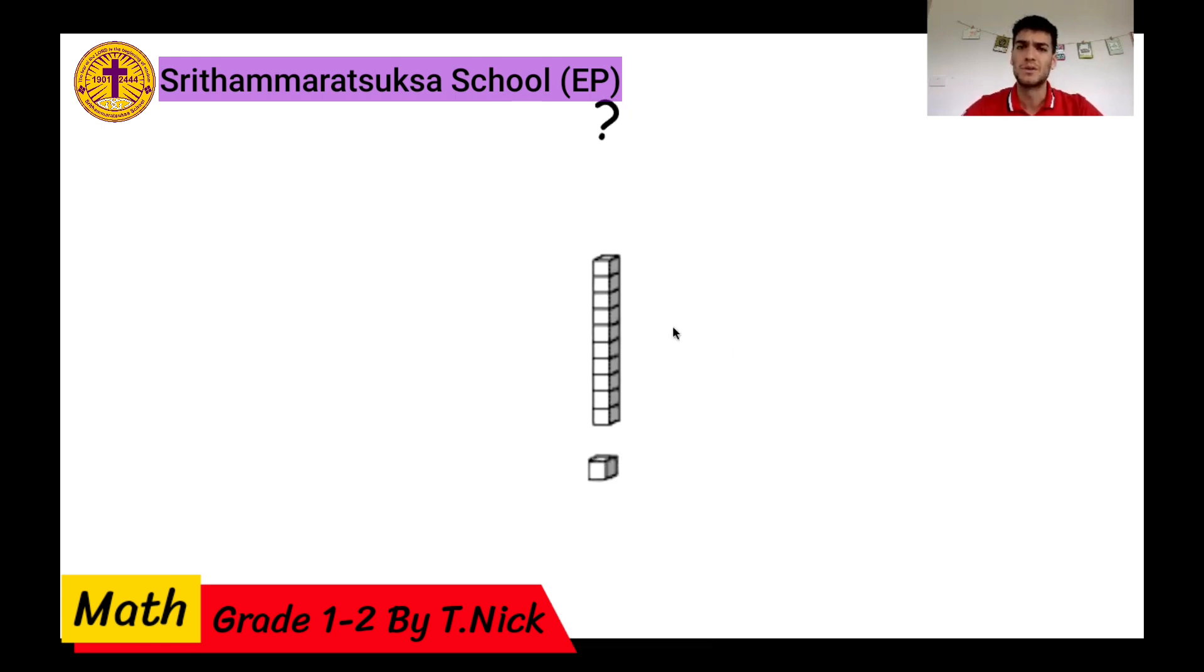So what happens when we have one of these and one of these? How many blocks do we have? 10 here and one here. 10 plus one is 11. That's right, 11 blocks.